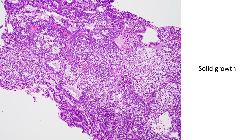And here we have areas of solid growth. In some areas you have clearly identifiable glandular spaces, but in other areas you have just a solid growth of glandular cells not forming discrete glands. This counts as solid growth — architectural complexity that would push you to carcinoma — and it's also used in the grading system for endometrioid adenocarcinomas, which we'll discuss in another session.